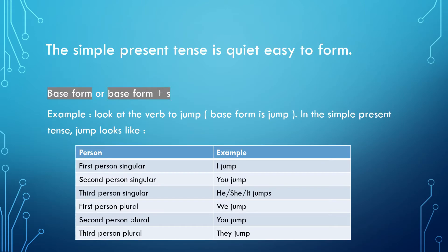The simple present tense is quite easy to form. Usually, we use the base form of the verb, and in some cases we add -s. When we examine the table, it is clear that in first person singular, second person singular, first person plural, second person plural, and third person plural, we use the base form of the verb along with the subject.